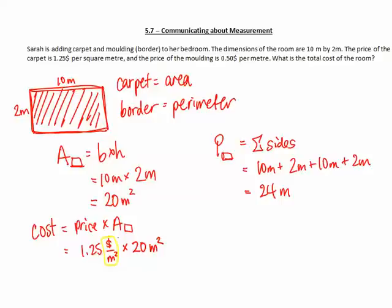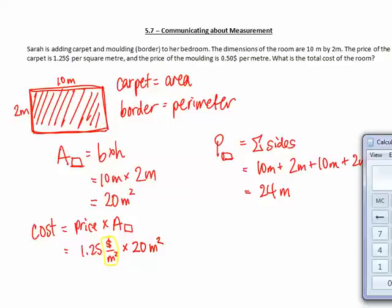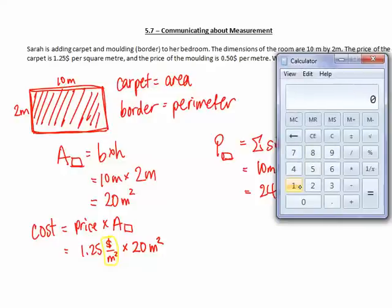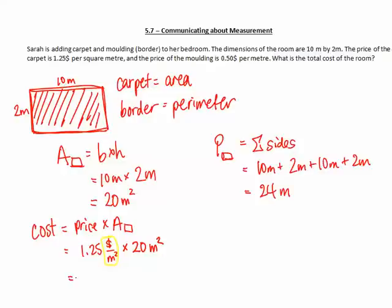Now what happens is when we multiply numbers, 1.25 times 20. So if I pull up the calculator, 1.25 times 20, I get 25 is my number.